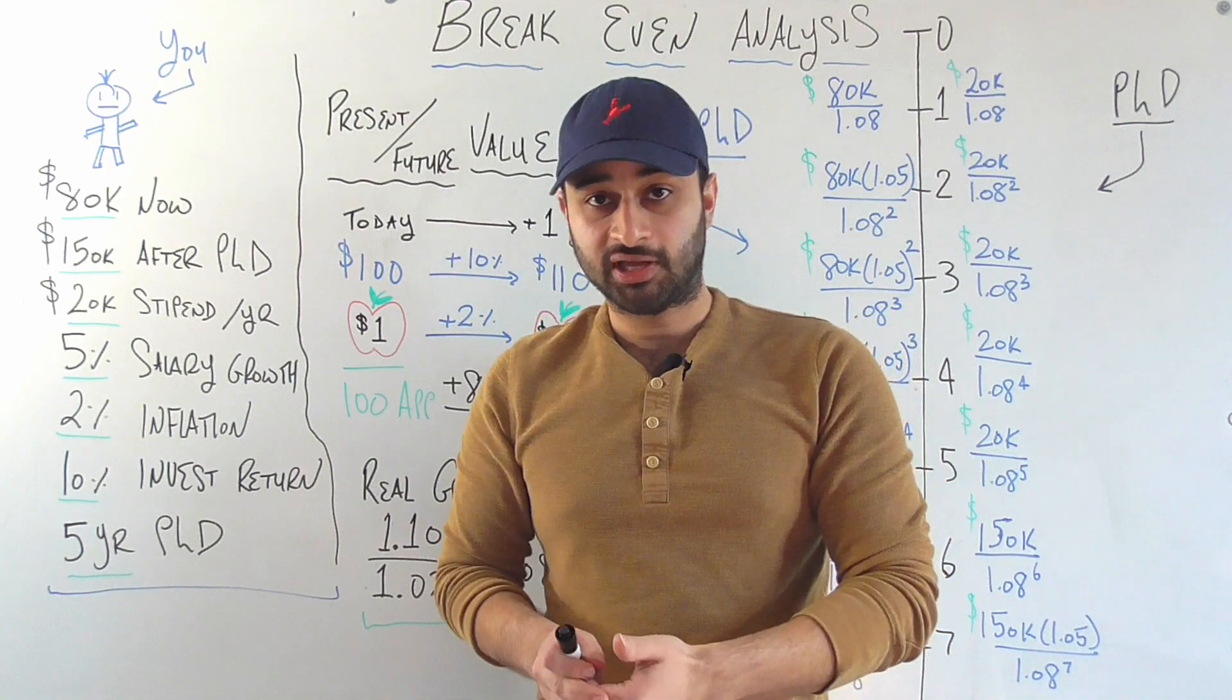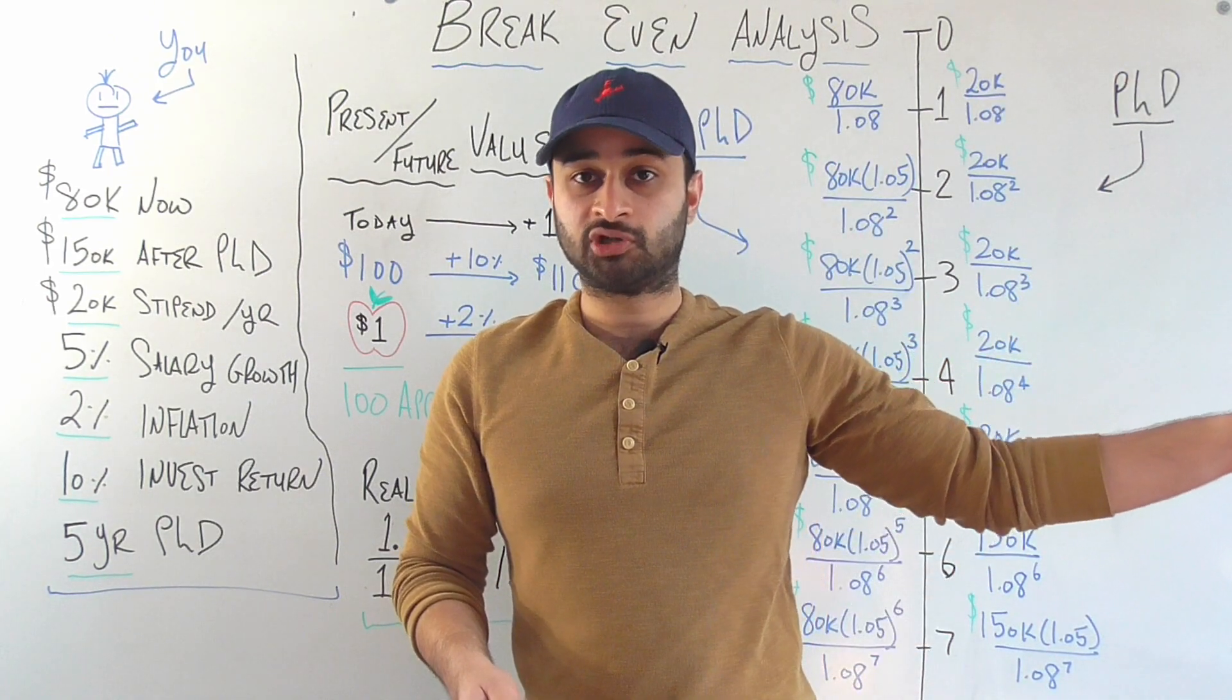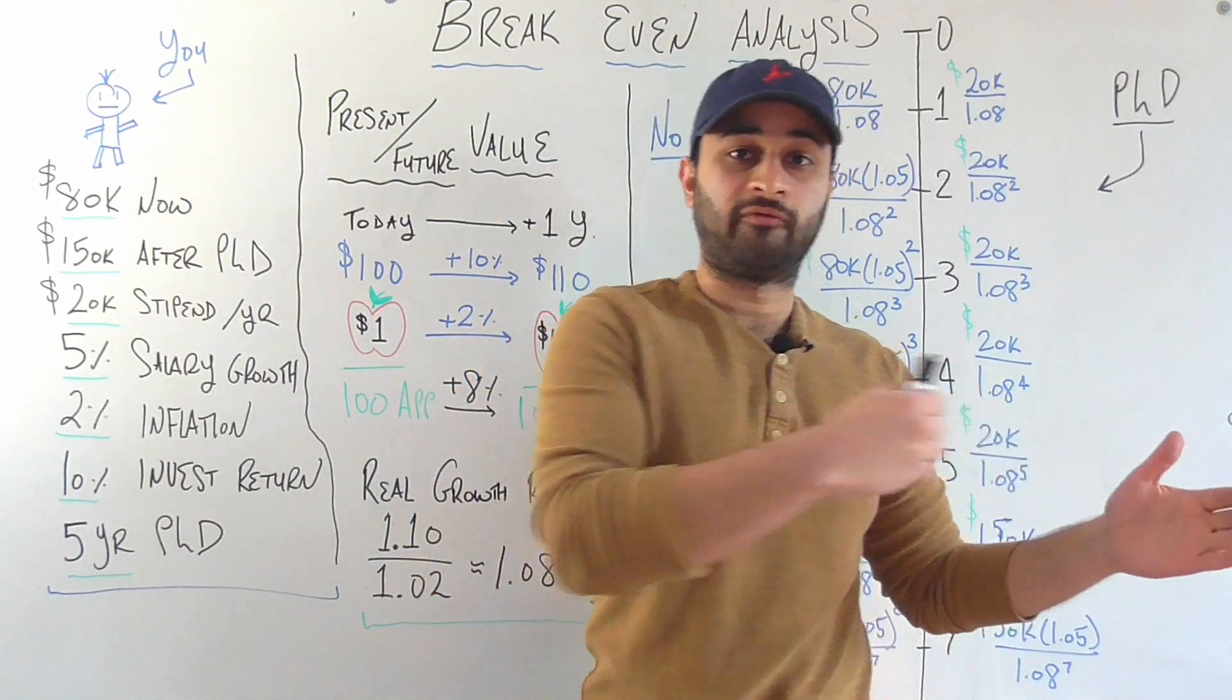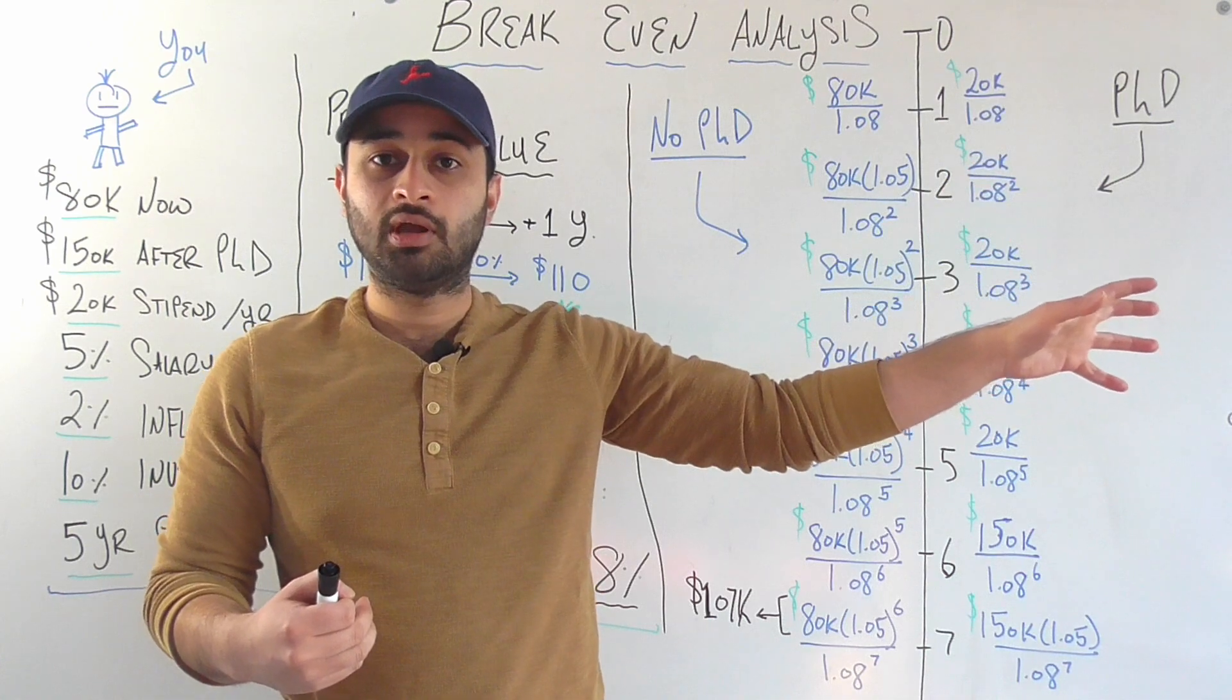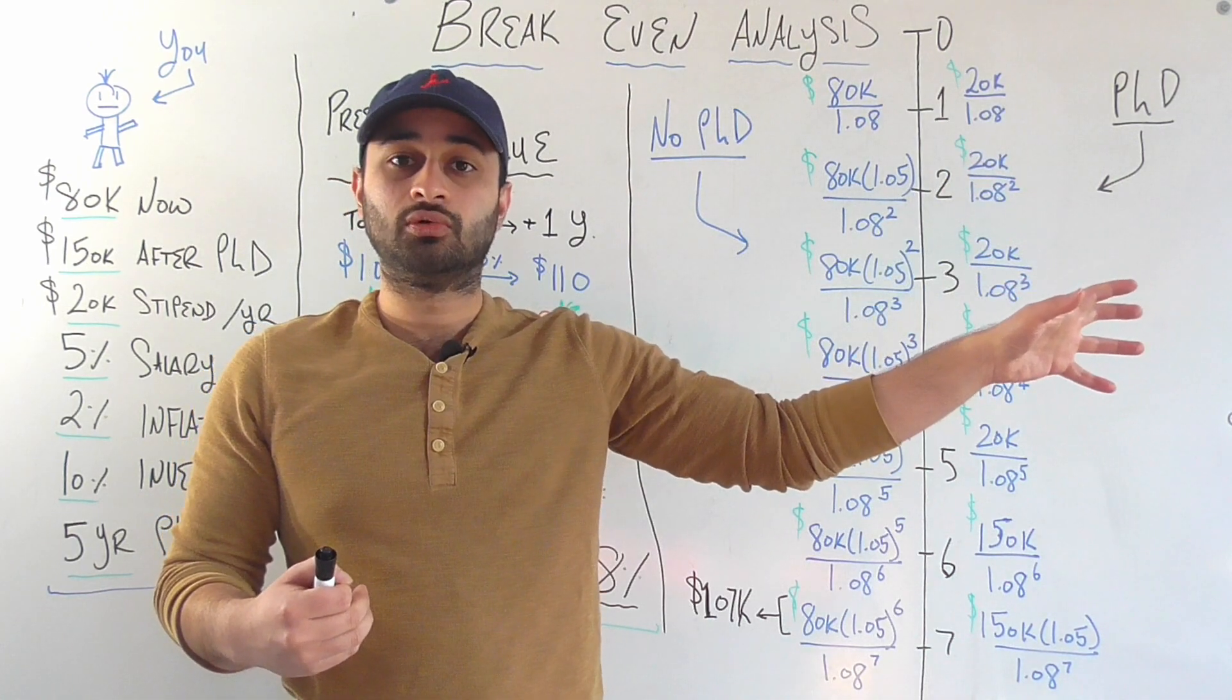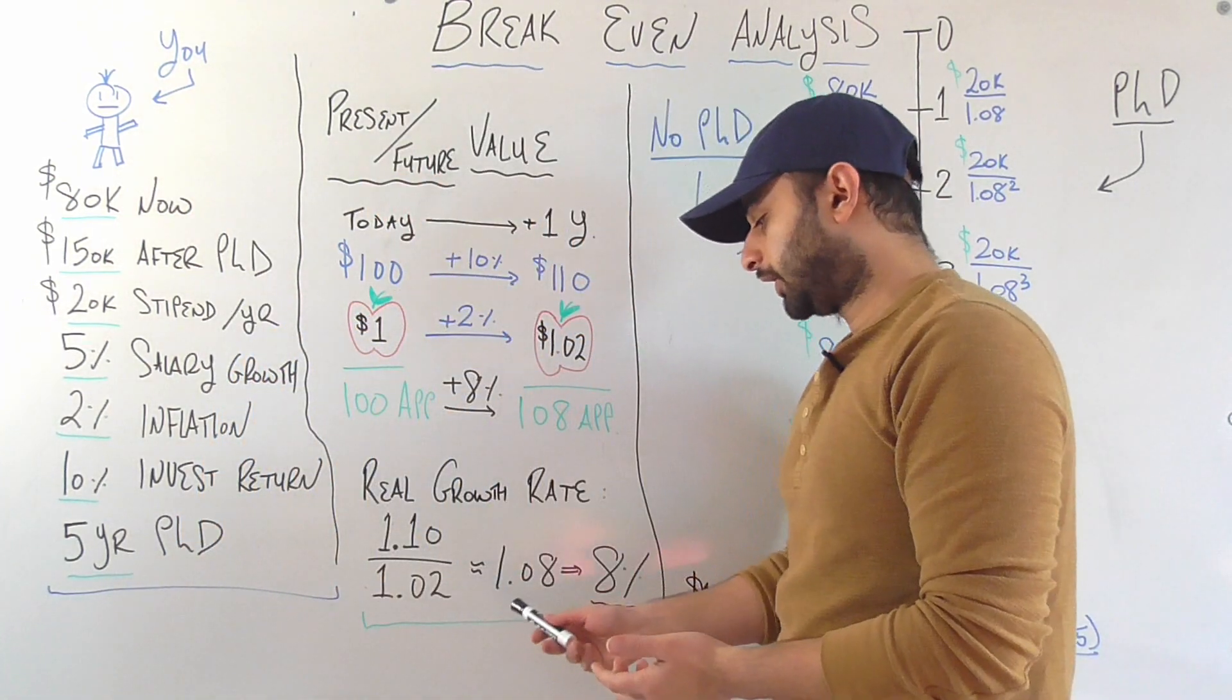We found that if you're currently at today, a year from now, your money can grow by 8% in terms of purchasing power. We can also work in the reverse direction. We can ask if you have a certain amount of money in a year from now, how much money is that equal to today in terms of purchasing power? And then we would just divide by 1.08.